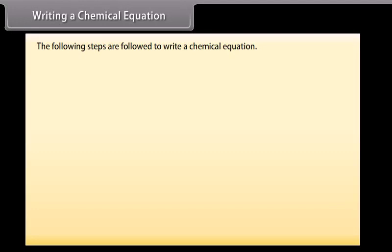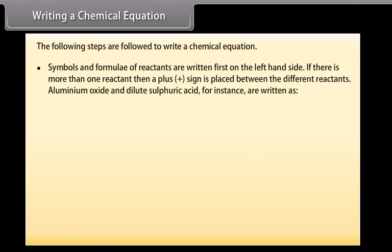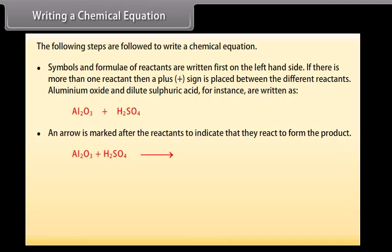Steps to write a chemical equation. First, symbols and formulae of reactants are written on the left-hand side. If there is more than one reactant, a plus sign is placed between the different reactants. For example, aluminium oxide and dilute sulphuric acid are written as Al₂O₃ + H₂SO₄. An arrow is marked after the reactants to indicate that they react to form the product.